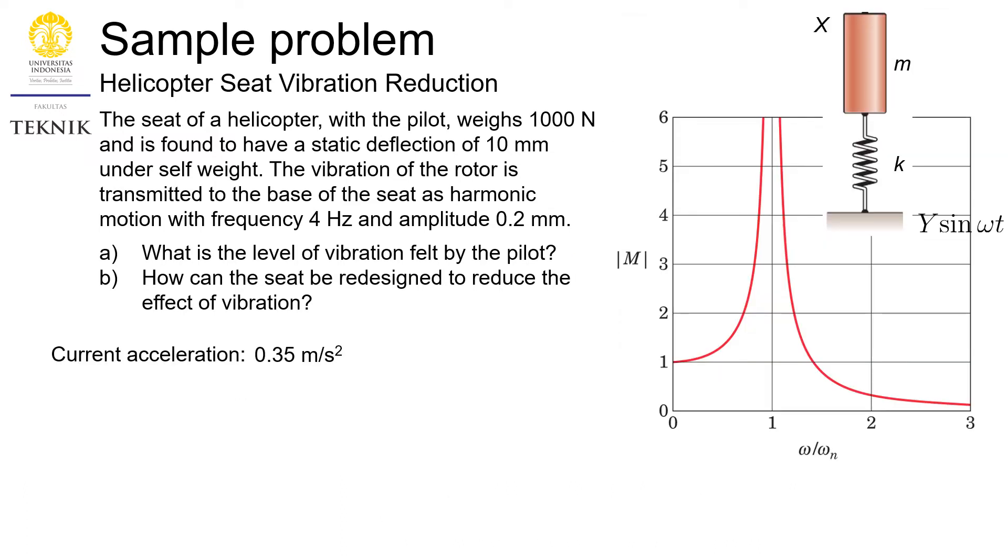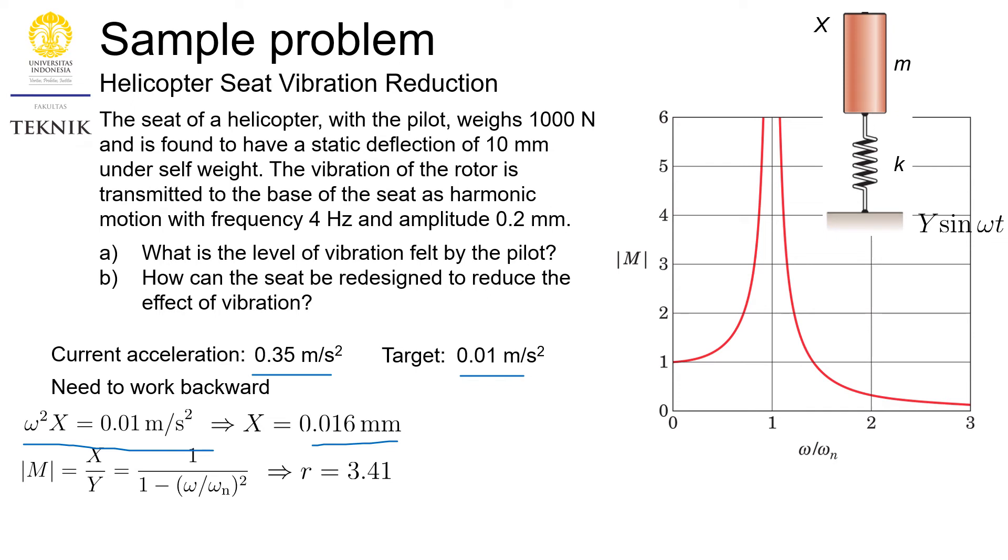How do we redesign the seat? We first need to set up our target. So let's say if the current acceleration is at 0.35, we can try to reduce it to about 100 times less, 0.01 meters per second squared. With that in mind, we need to work backward. With this equation, we can get our capital X, which is this much, and then plug it in into our magnification factor formula. We can get our ratio.